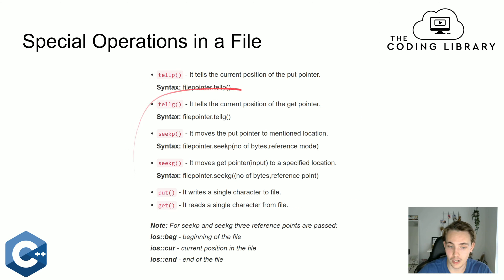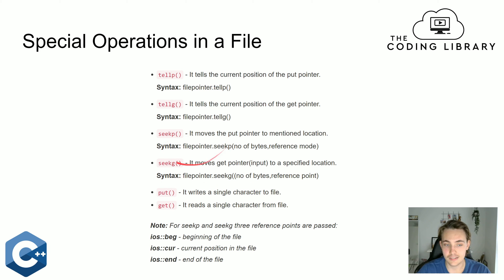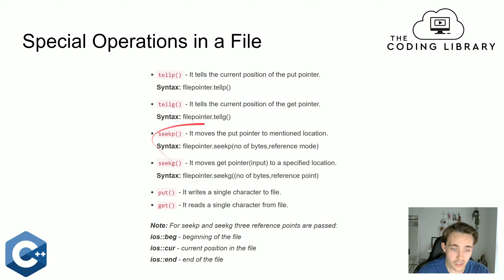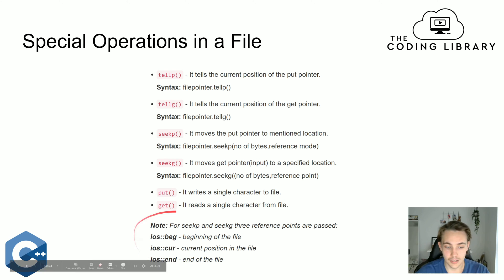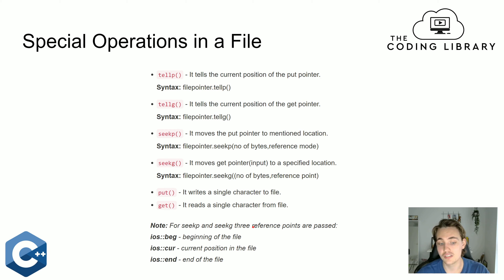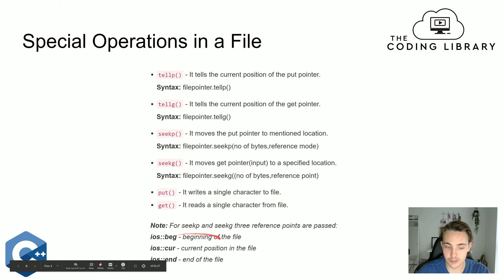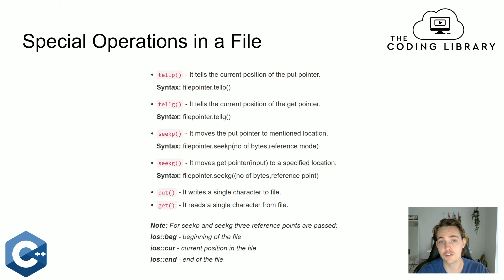We also have put and get functions if we just want to read or write a single character from a file or to a file. And seekP moves the put pointer to a mentioned location, so if we want to specify exactly where in a file we want to modify or write something, we can use this function. When using seekP and seekG, we need three reference pointers — we can pass parameters for the beginning of the file, the current position in the file, or the end of the file.